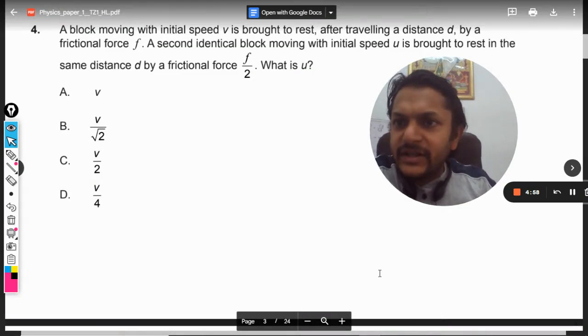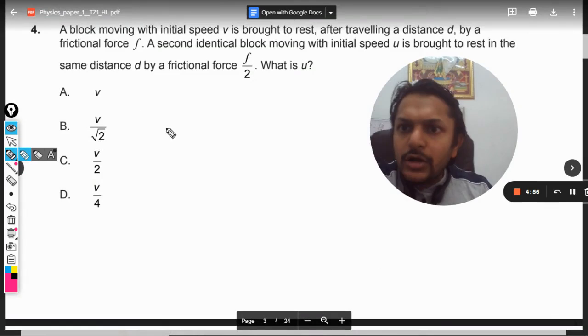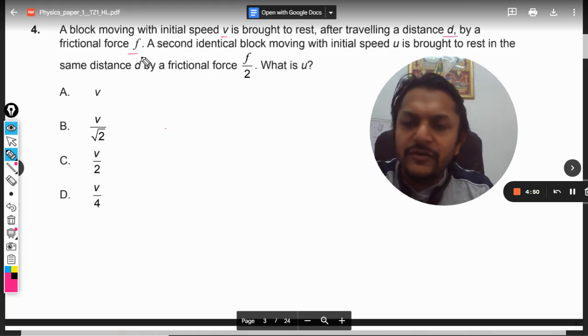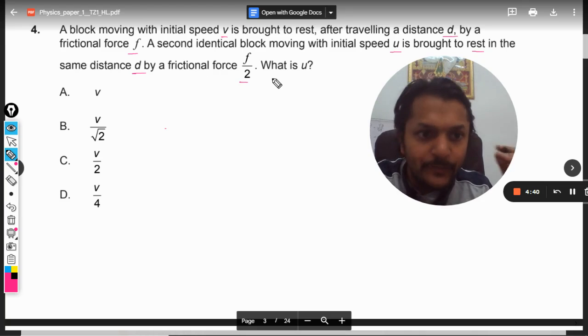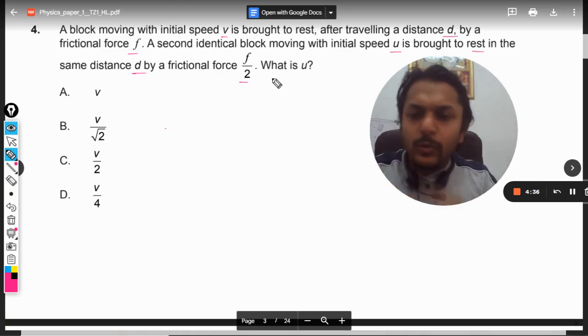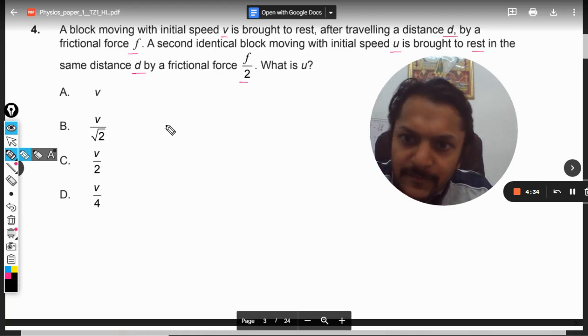Okay, dear students, let us see what is there in this question. A block moving with initial speed V is brought to rest after traveling a distance D by a frictional force F. A second identical block moving with initial speed U is brought to rest in the same distance D by a frictional force F/2. What is U?